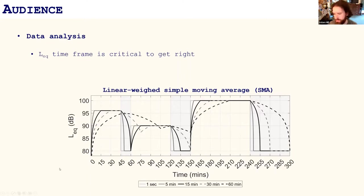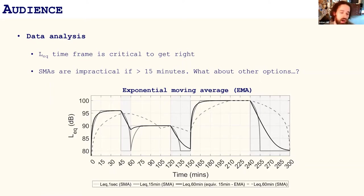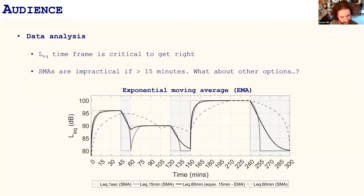An alternative is an exponential moving average, or EMA. I've plotted a 15-minute simple moving average alongside a 60-minute EMA that has been calibrated to mimic the responsiveness of the 15-minute SMA — you can see it follows a very similar trend and gives timely information while still factoring in the full 60 minutes of sound level data. I'm not saying this will ever get into any standards or regulations, but I think it could be an interesting tool as a secondary sound level monitor to give engineers more timely information.